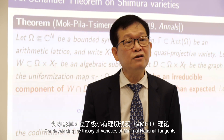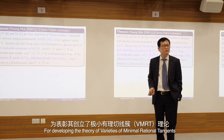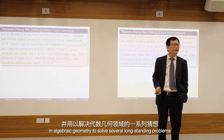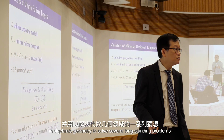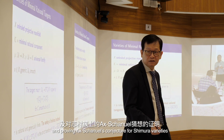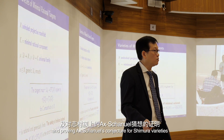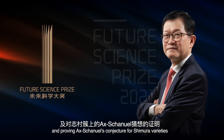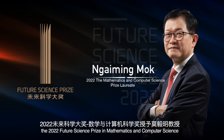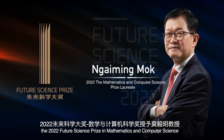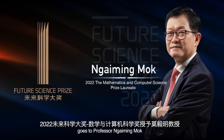For developing the theory of varieties of minimal rational tangents in algebraic geometry to solve several long-standing problems, and proving Ax-Schanuel's conjecture for Shimura varieties, the 2022 Future Science Prize in Mathematics and Computer Science goes to Professor Ngaiming Mok.